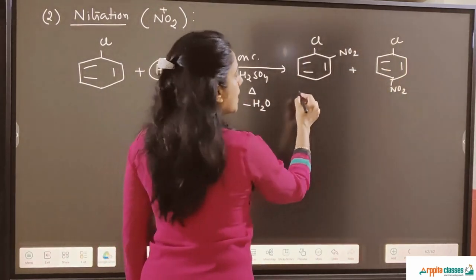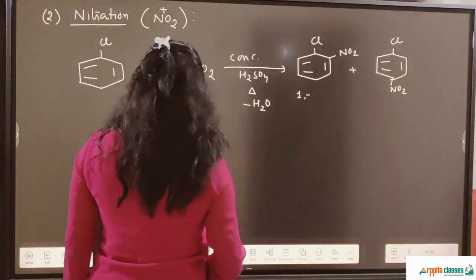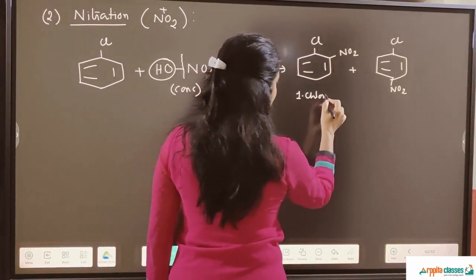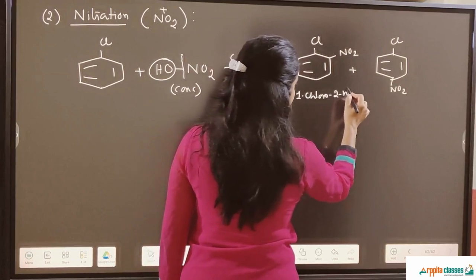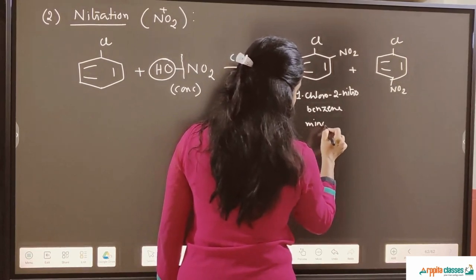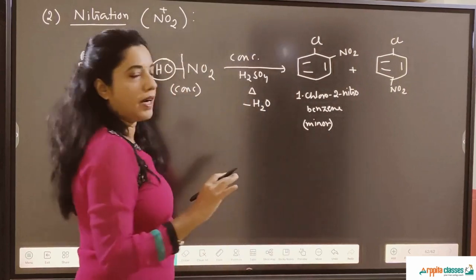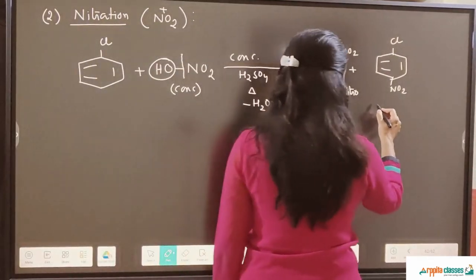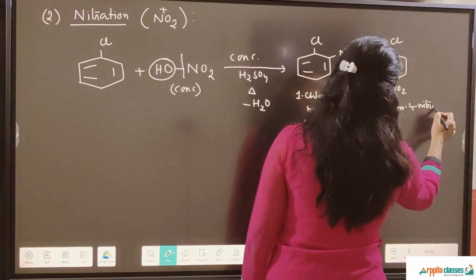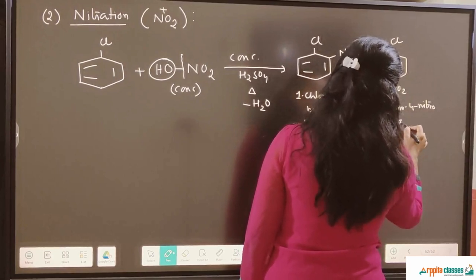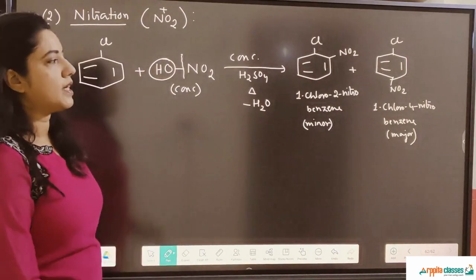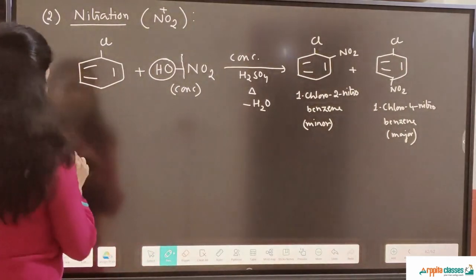The two products are named as follows: 1-chloro-2-nitrobenzene, which is the minor product — as mentioned, whenever we get ortho and para products, ortho is always the minor product — and 1-chloro-4-nitrobenzene, which is the major product. So this is our nitration, the second electrophilic substitution reaction.